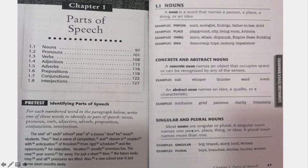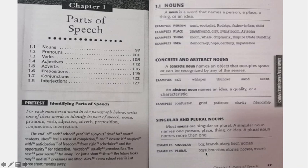Most nouns are singular or plural. A singular noun names one person, place, or thing — just one, single. If it is plural, it is two or more. When a noun is pluralized, the form changes in most cases. For example, boy becomes boys — you just add an S. Branch becomes branches — you add ES.